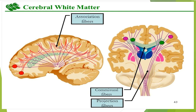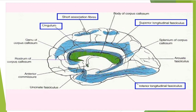Association fibers comprise short and long association fibers. Short association fibers are represented by a single type called arcuate fibers, which connect neighboring gyri. Long association fibers include the superior longitudinal fasciculus, inferior longitudinal fasciculus, cingulum, and uncinate fasciculus. The superior longitudinal fasciculus runs above the corpus callosum.